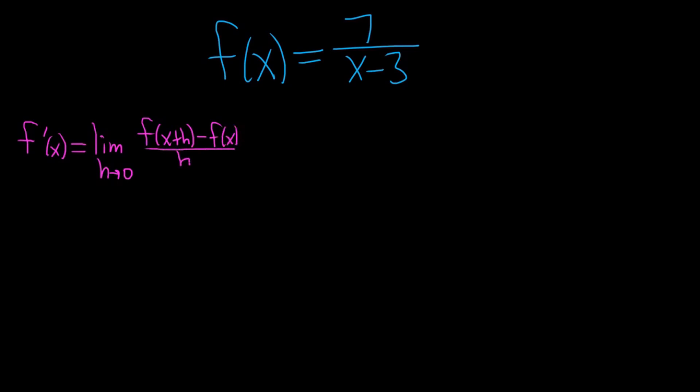So all we have to do is work this out. This is equal to the limit as h approaches 0. f of x plus h basically means we replace all of the x's here with x plus h's. So it'll be 7 over x plus h minus 3. Then we have minus f of x, which is 7 over x minus 3. And all of this is being divided by h.